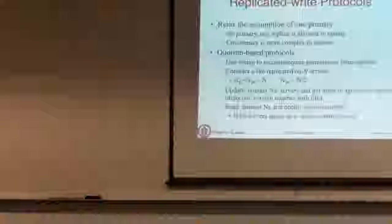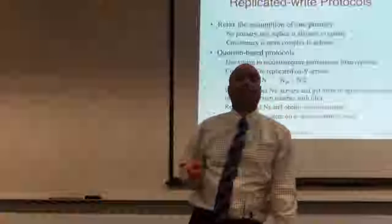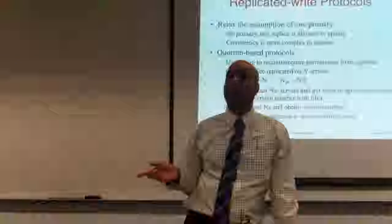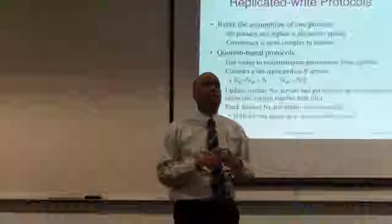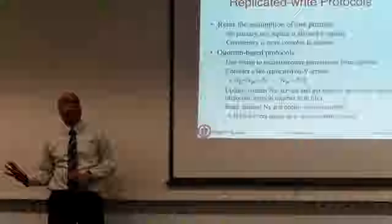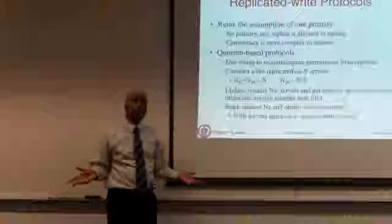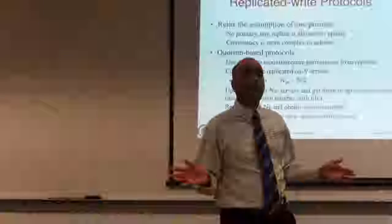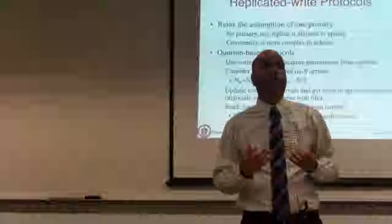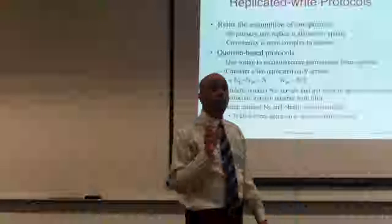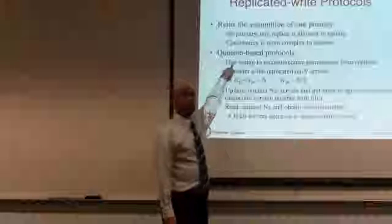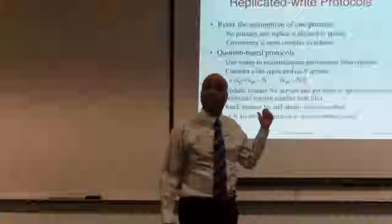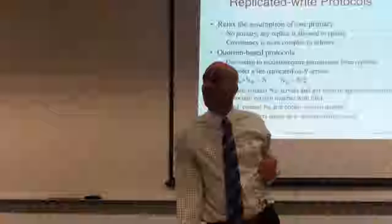You could write to all the replicas, but there are techniques that allow you to write to a subset of the replicas and yet ensure correctness — meaning you will never get an out-of-date version. It is advantageous to not require writing to all replicas because some replicas may be down. You cannot make progress if every update must propagate to all replicas before proceeding. These protocols are called quorum-based protocols — a term you may have heard referring to some kind of majority.